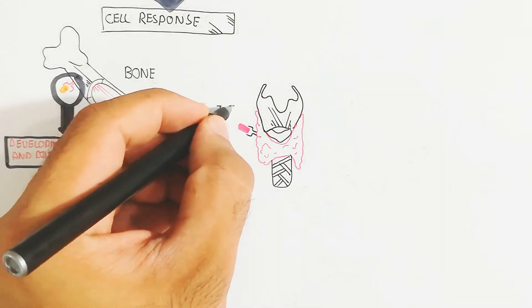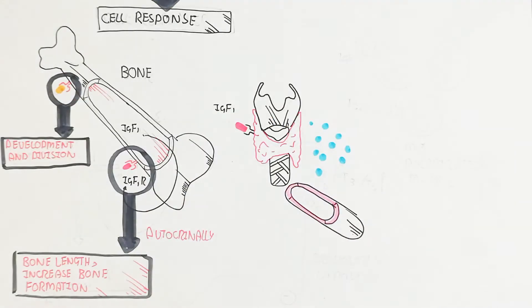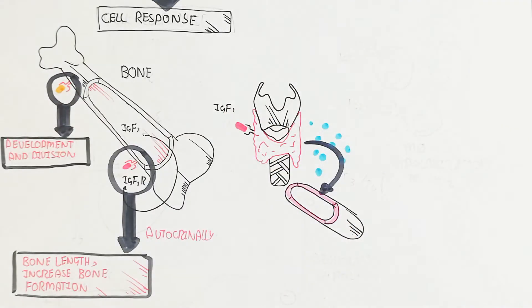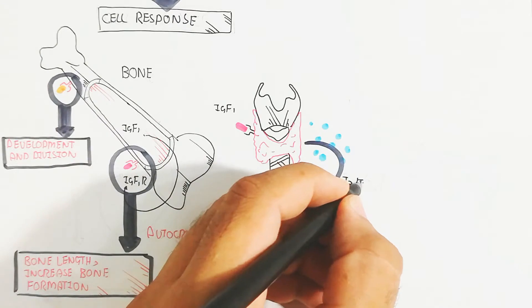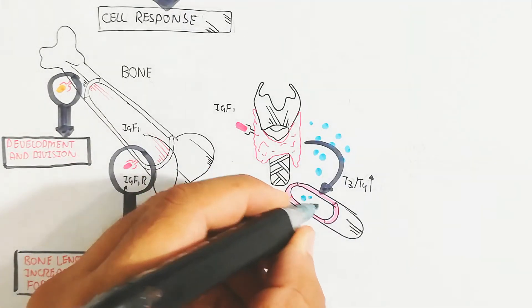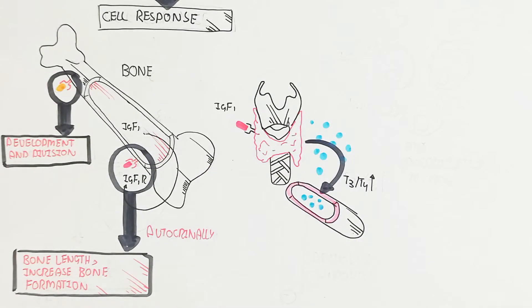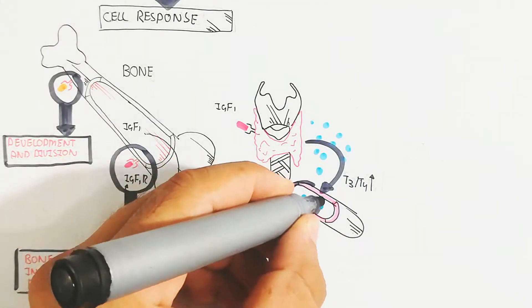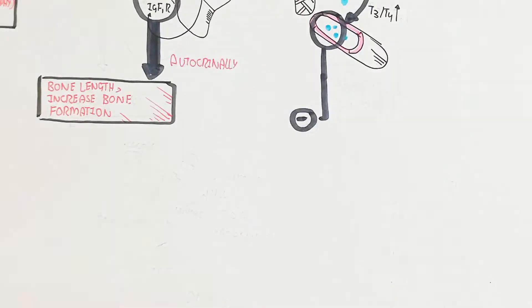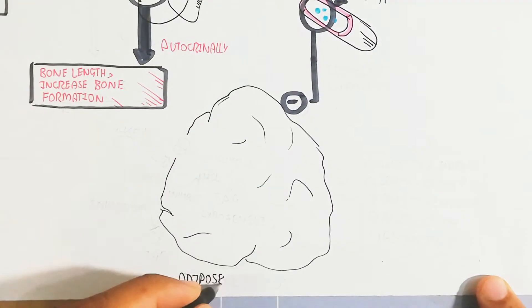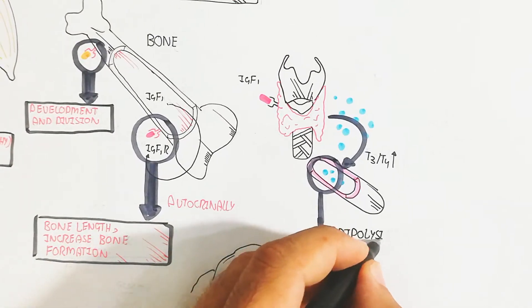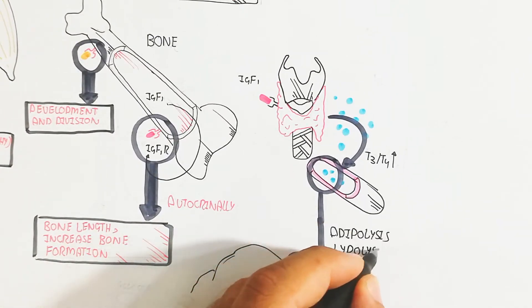When IGF-1 binds with the thyroid gland, it increases thyroxine (T4) and triiodothyronine (T3) production. This leads to adipolysis and lipolysis, increasing metabolism for heat production.